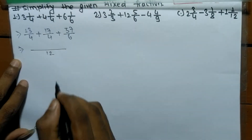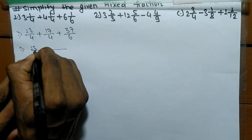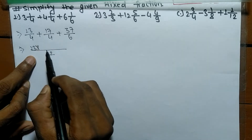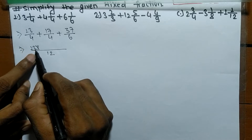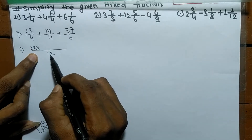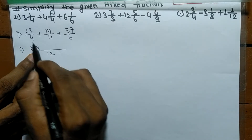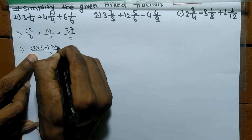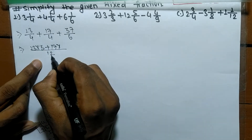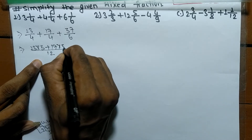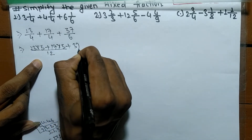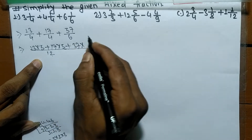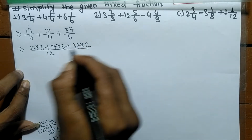So the LCM of 4, 4, and 6 is 12. Now we multiply each numerator with the quotient of LCM divided by the respective denominator. So 13 into 12 divided by 4 means it is 3, plus 17 into 12 divided by 4 means it is 3, plus 37 into 12 divided by 6 means it is 2.